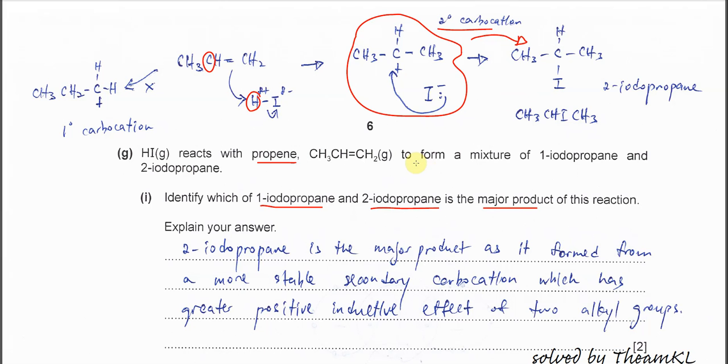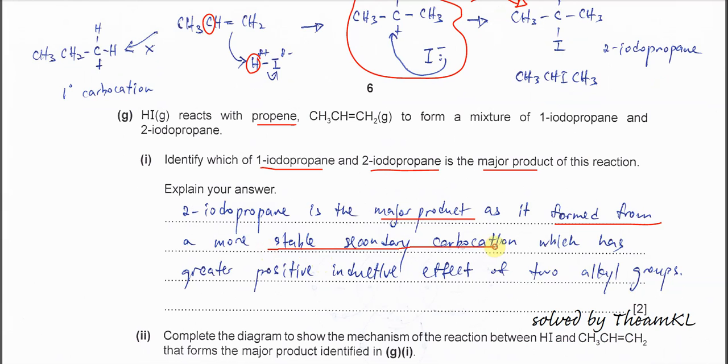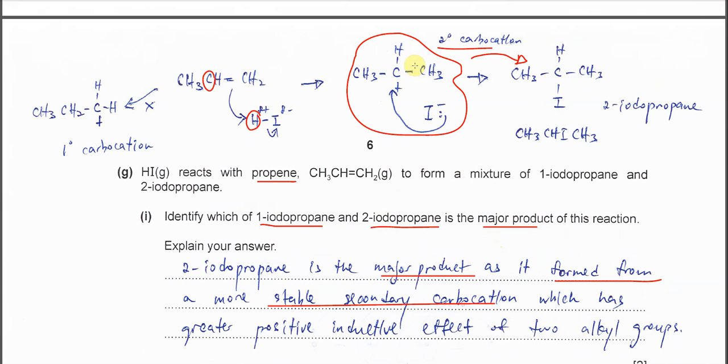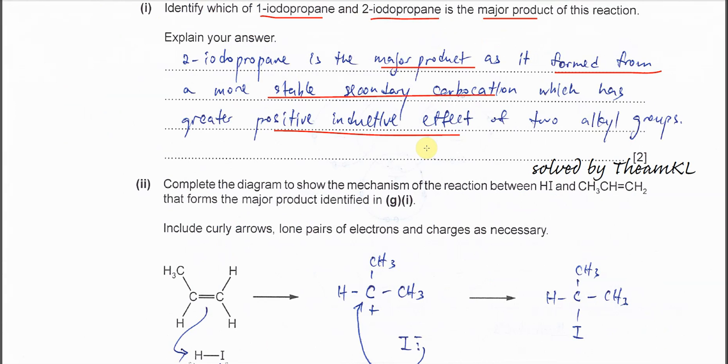If you understand this, then you will know how to explain. 2-iodopropane is the major product as it's formed from the more stable secondary carbocation, which has the greater positive inductive effect from the two alkyl groups. You push electrons to this carbocation and this carbocation is more stable.